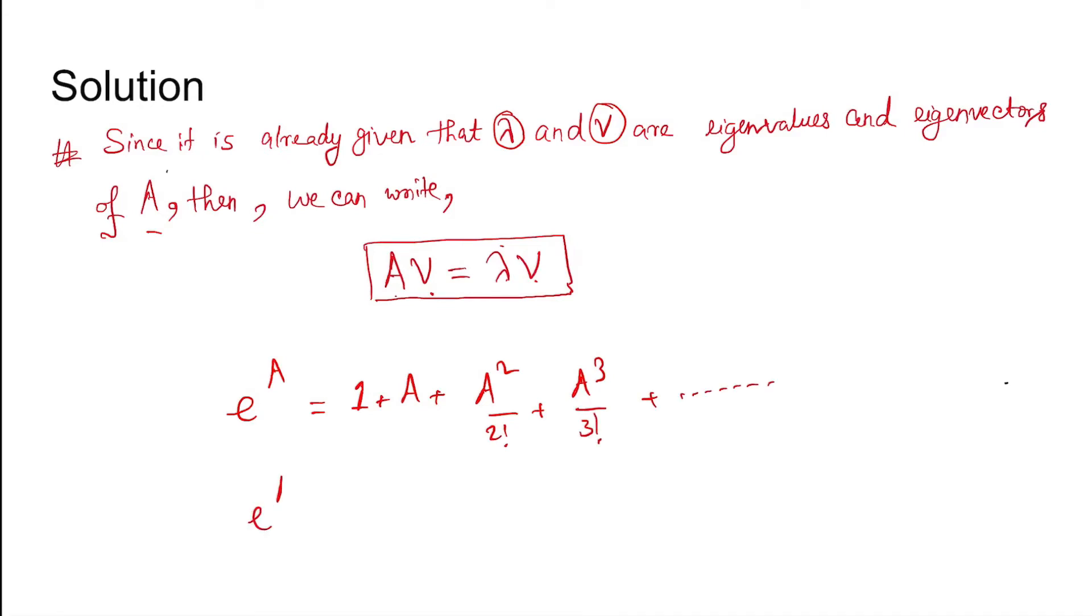Now, E to the power A times V equals V plus A into V plus A square by 2 factorial into V and so on.